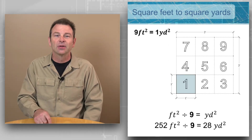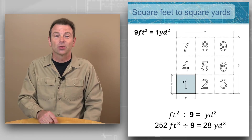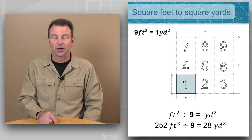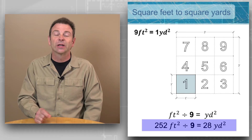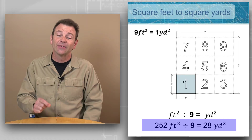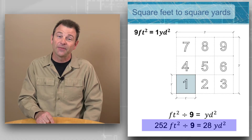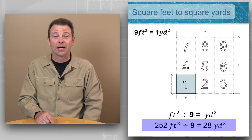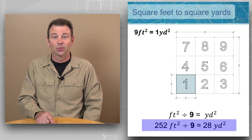Here's an example of converting square feet to square yards. Using that factor of nine: if I take 252 square feet and divide it by nine, that will equal 28 square yards.